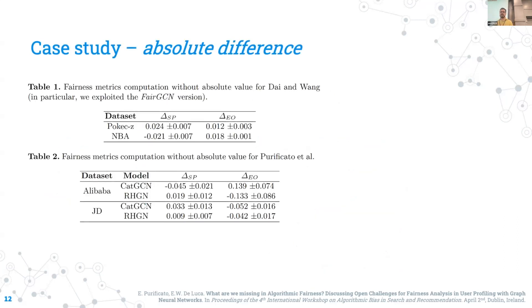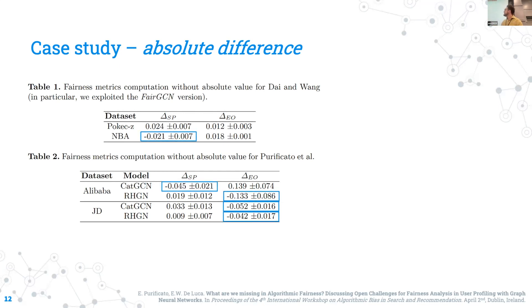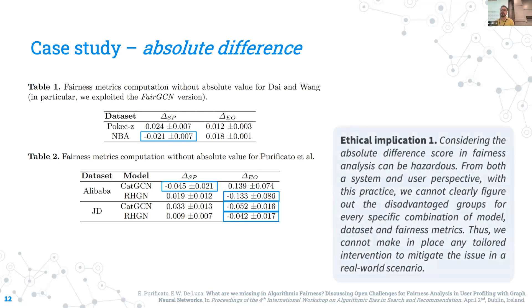The first case study is about the absolute difference. What we did is to reproduce the same experiment but removing the absolute value from the score. As we can see, highlighting only the negative results, from these experiments we can derive our first ethical implication.